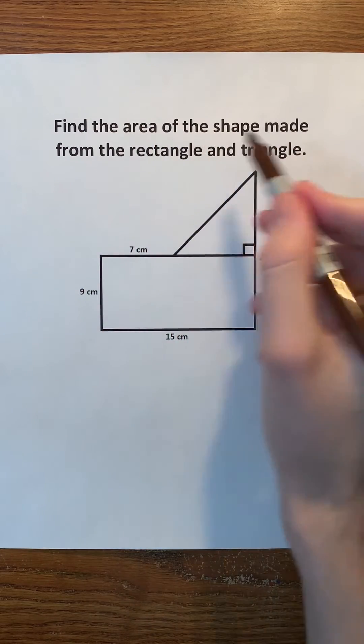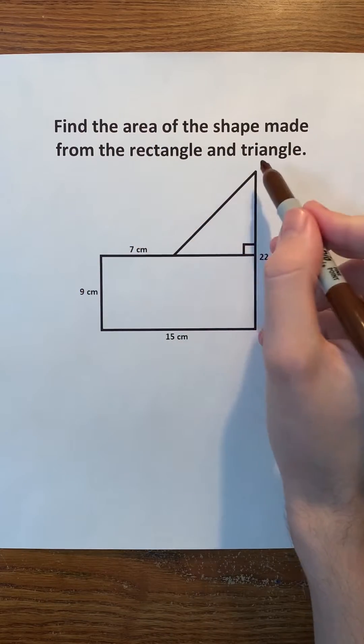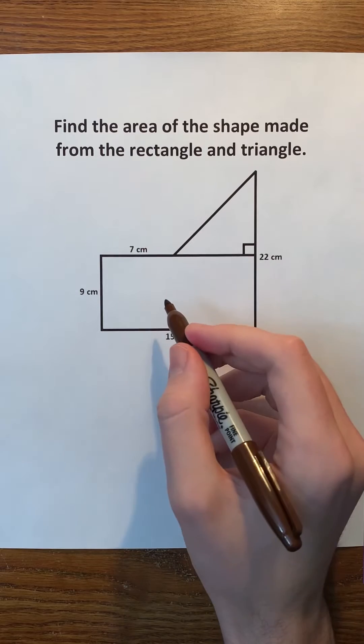We have to find the area of the shape made from the rectangle and the triangle. First, let's find the area of the rectangle.